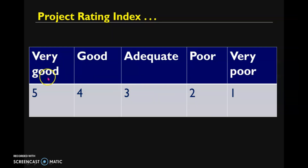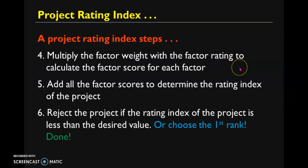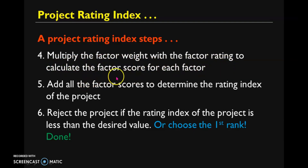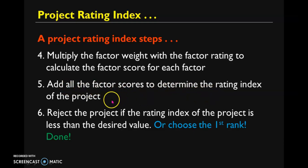On the five-point scale: five means very good, four means good, three means adequate, two means poor, and one is very poor. The remaining steps are to multiply the factor weight with the factor rating to calculate the factor score for each factor, then add all the factor scores to determine the rating index of the project.